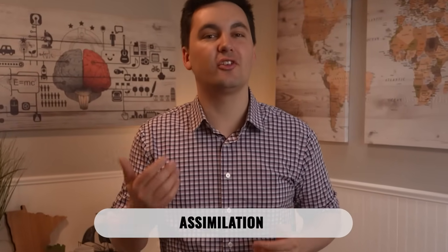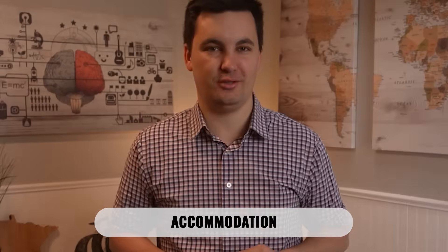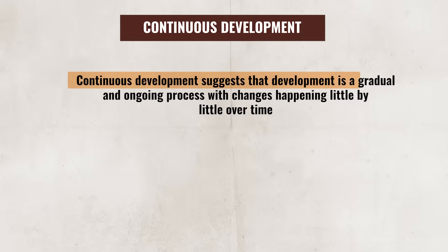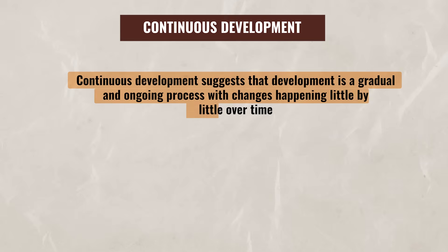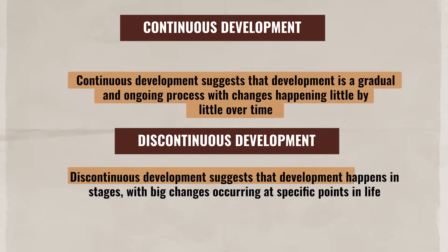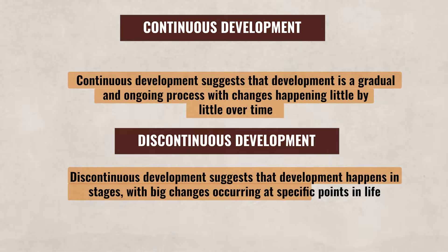Piaget believed that schemas developed through continuous and discontinuous processes, such as assimilation and accommodation. Continuous development suggests that development is a gradual and ongoing process, with changes happening little by little over time. Discontinuous development suggests that development happens in stages, with big changes occurring at specific points in life. Now I mentioned assimilation and accommodation — we need to make sure you understand the difference between these two concepts.